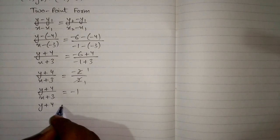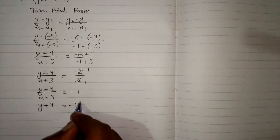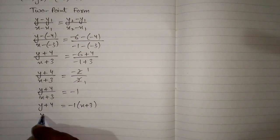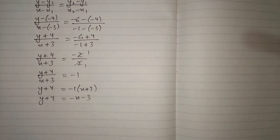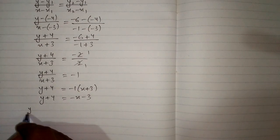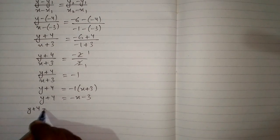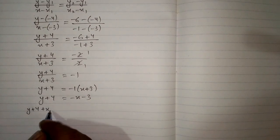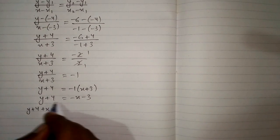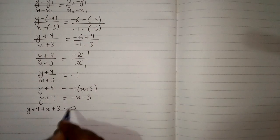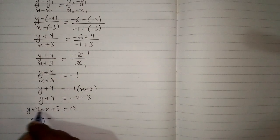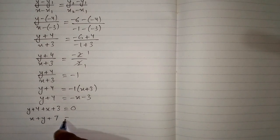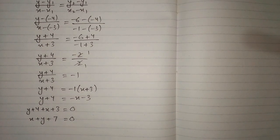Now we multiply x plus 3 by minus 1 when we take it to the other side of the equation, so we have y plus 4 is equal to minus x minus 3. Then we take minus x to the other side, where it becomes plus x, and minus 3 also moves over as plus 3. So x plus y plus 4 plus 3 equals 0, giving us x plus y plus 7 is equal to 0. This is the required equation of the straight line passing through the given points.